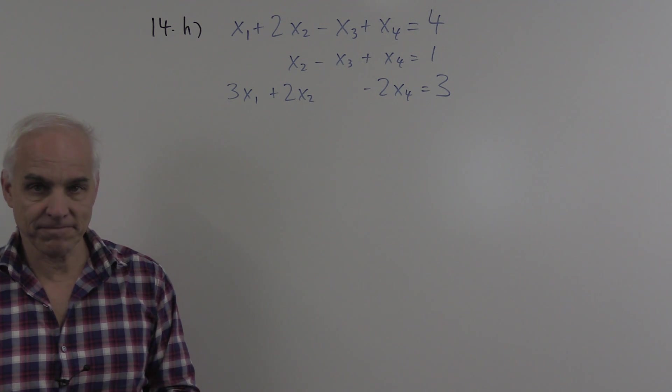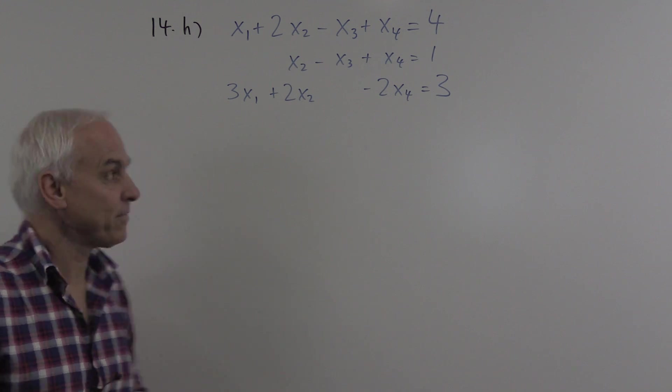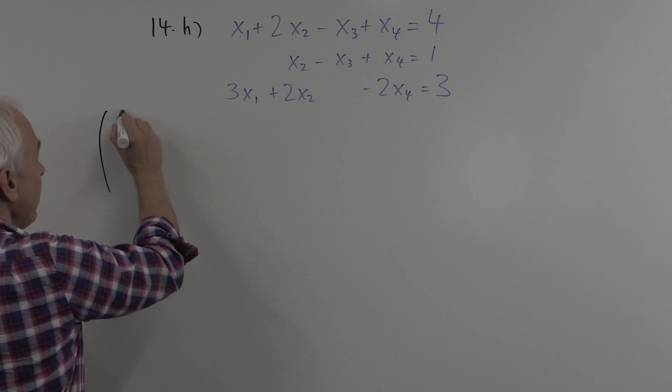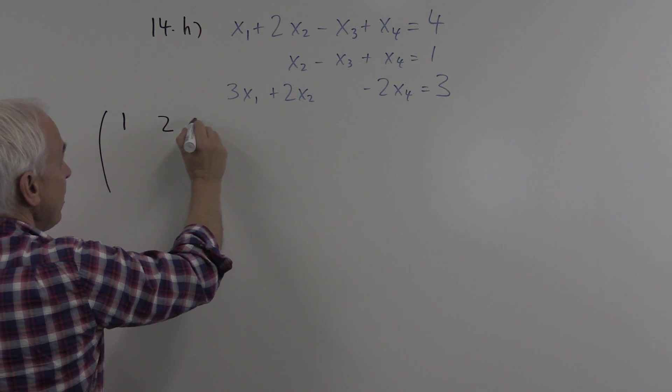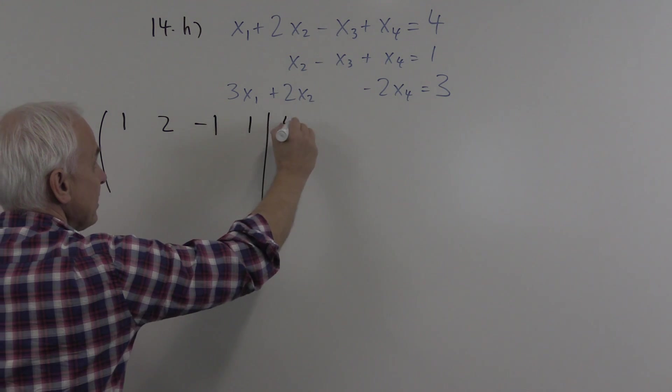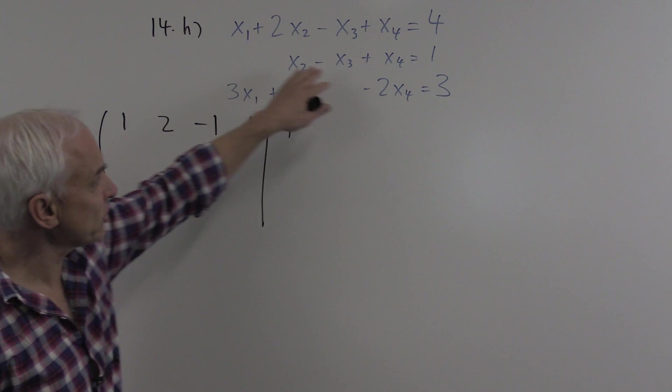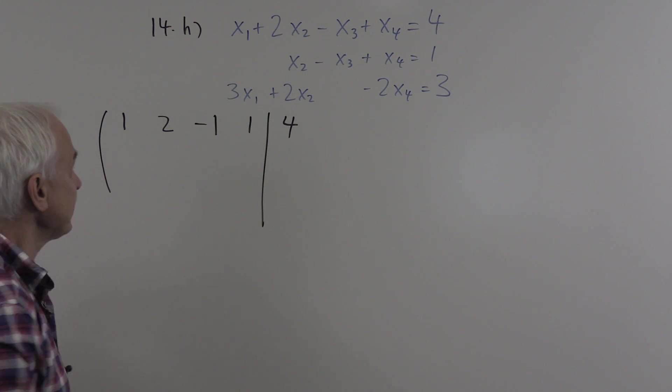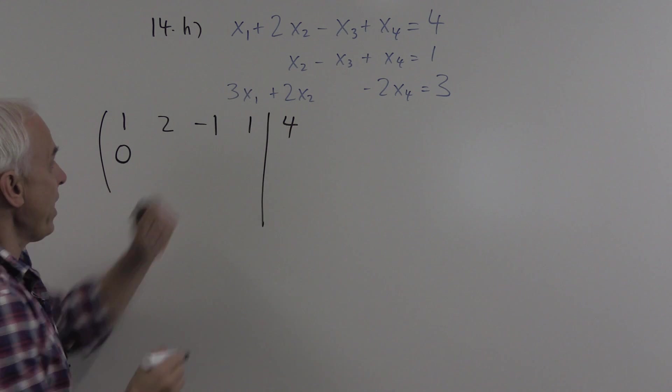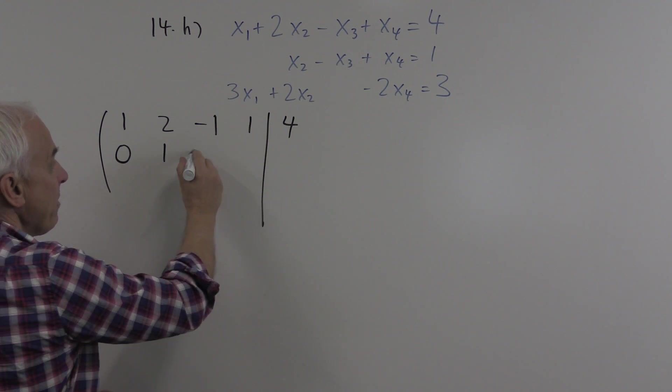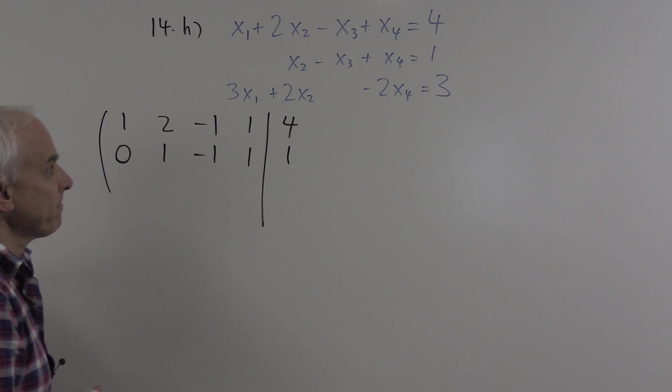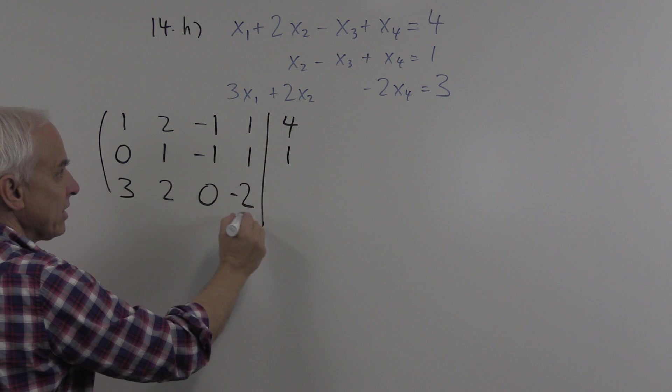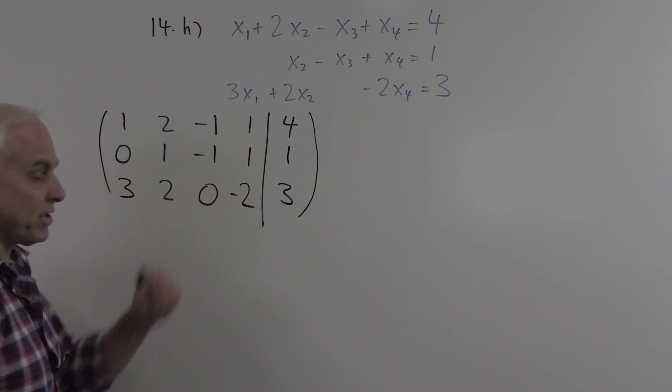Let's proceed and use row reduction. First thing is to write down an augmented matrix for the system. We take the first row and record the coefficients which are 1, 2, minus 1, 1, and on the right hand side separated with this bar here is a 4. The next row we have to write down the coefficients making sure they're in the right places. There's no x1 so we put a 0 here, then 1 x2, then minus 1, 1, and on the right hand side of 1. Our final equation: 3x1, 2x2, 0x3, minus 2x4, and 3.